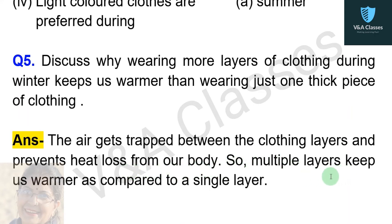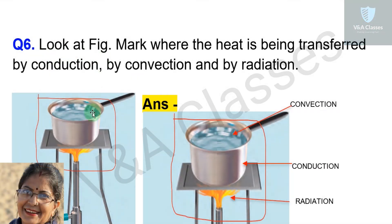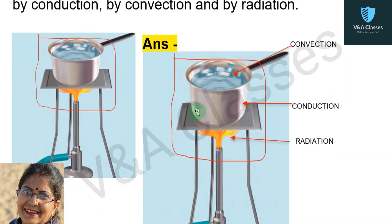Question number six: look at the figure and mark where heat is being transferred by conduction, by convection, and by radiation. Answer: in the area above the flame, heat is transferred by radiation. For the utensil, heat is transferred by conduction. For water to water vapor, heat is transferred by convection.